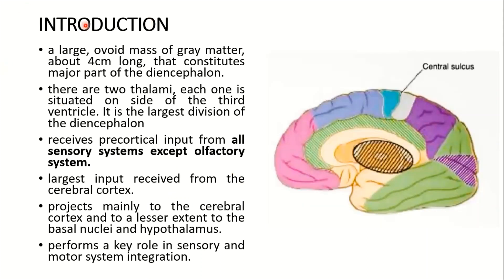The first lecture: introduction. The thalamus - this is the outline of the thalamus from the medial aspect of the brain. It's a large ovoid mass of grey matter, about four centimetres long, that constitutes a major part of the diencephalon. The diencephalon consists of the hypothalamus and thalamus. The hypothalamus has been discussed in detail in four or five lectures already in my previous videos.